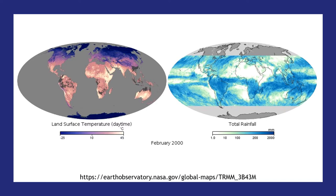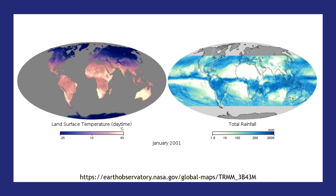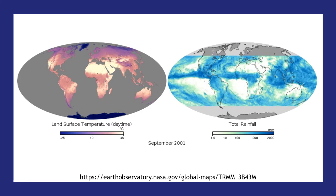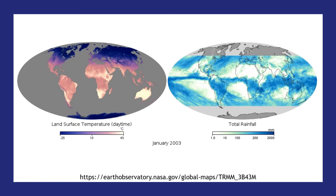NASA Earth Observatory measures many different atmospheric parameters and generates movies for education and entertainment. On these flattened Earth images — note the Earth is not flat, but these are globes that have been flattened out — on the left we can see the land surface temperatures on the globe, and on the right we see the precipitation.